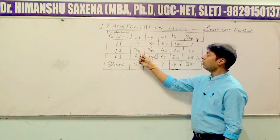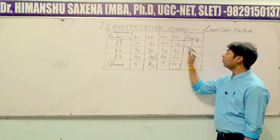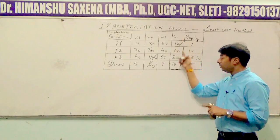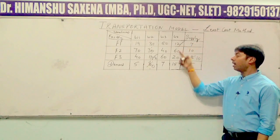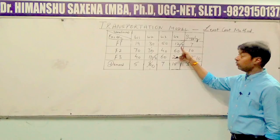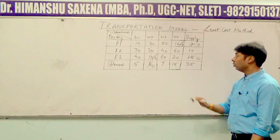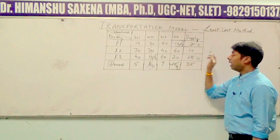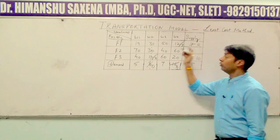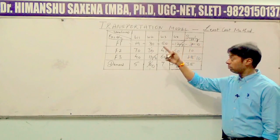From the remaining cost cells, the next minimum cost cell is 12. The supply in front of it is 7 and the demand below it is 15, so the minimum value is 7. We allocate 7 units to this cell. The supply becomes 7 minus 7 equals 0, and the demand becomes 15 minus 7 equals 8. Since the supply of factory 1 has turned 0, the entire row for factory 1 is deleted.